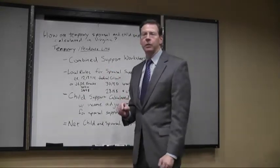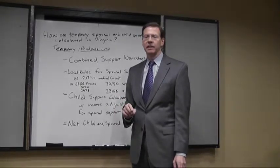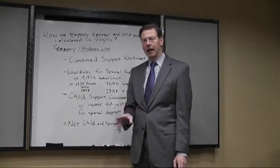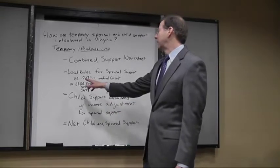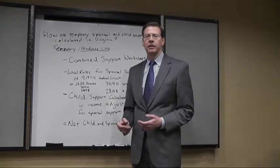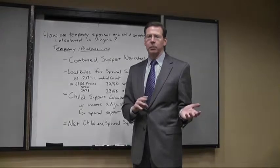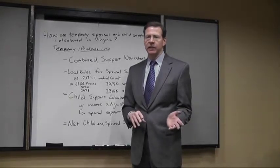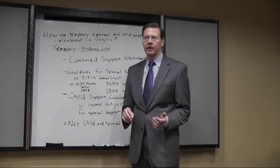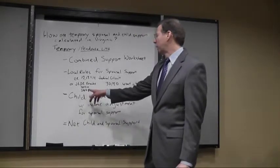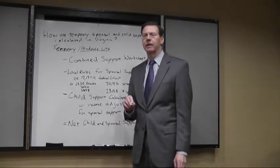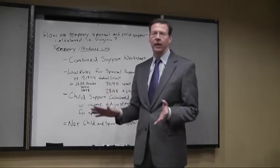What will likely be used to calculate these amounts is a worksheet that combines a calculation of spousal support and child support. The spousal support shall be determined first by the court, usually by the provision in the Juvenile and Domestic Relations District Court code section 16.1-178.17.1 — a formula of 30-50: 30% of the payor spouse's income minus 50% of the payee spouse's income, if they don't have children.